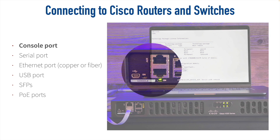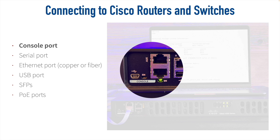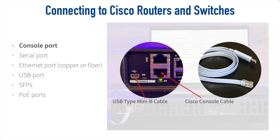If we take a closer look at the console port, there are a couple of ways of connecting. One way is to use a USB Type Mini-B cable, or you can use a Cisco console cable. Be cautious when selecting a cable — the console port accepts an RJ45 connector, however the console cable is flat and is not wired like an Ethernet cable. When setting up your terminal emulator for the serial port settings, by default you'll use 9600 as your baud rate, eight data bits, no parity, and one stop bit — so 9600, 8, N, 1 are your serial settings.